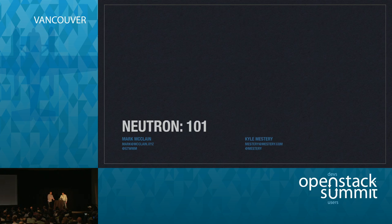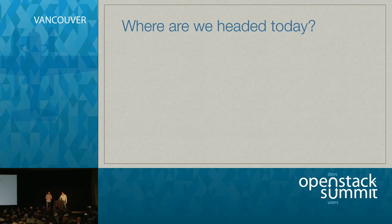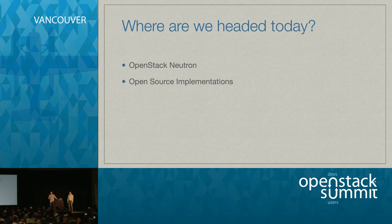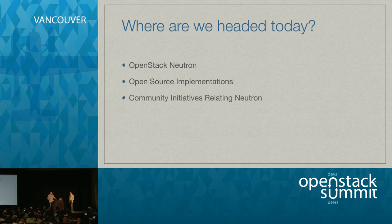So let's dive into Neutron 101. We're going to cover OpenStack Neutron — what is it? It is the OpenStack networking project, and underneath it has a constellation of projects. We'll cover the open source implementations and the reference implementation, some community initiatives, and what's in the most recent release in Kilo, plus a peek ahead to what's in the next release, Liberty.